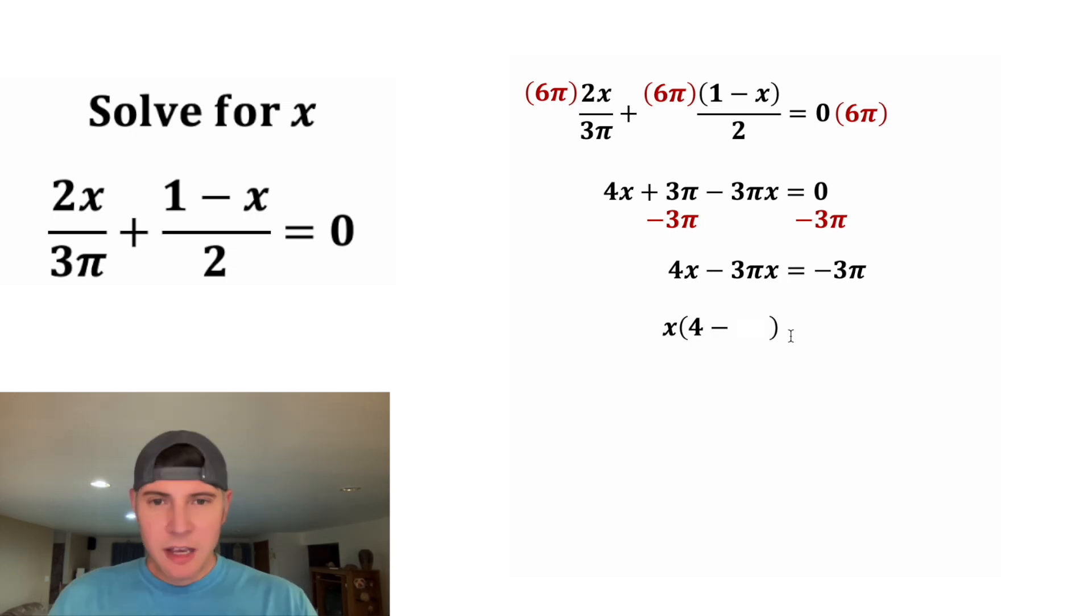And when we factor an x out of 3πx, we're left with 3π. And we're still equal to negative 3π.